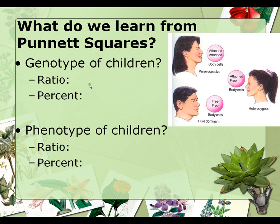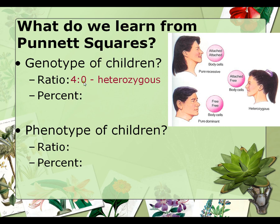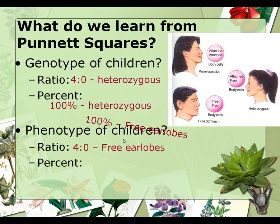So what do Punnett squares tell us? They can tell us the genotype and the phenotype of children. For the genotype, we create a ratio — in this case, 100% of the children will be heterozygous for this trait. For the phenotype, since free earlobes are dominant and all children have one allele for free and one for attached, the phenotype will be free earlobes at 100%.